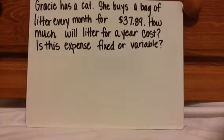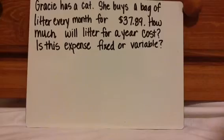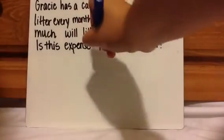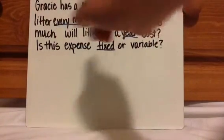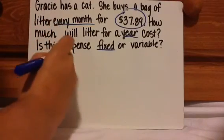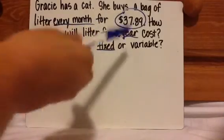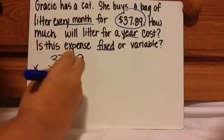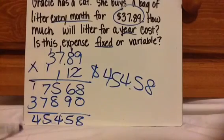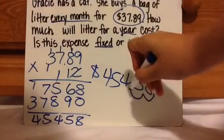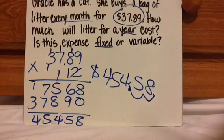From this problem, it doesn't say that sometimes she buys it and sometimes she doesn't, or that she'll buy one brand then another. It seems pretty consistent, so it's going to be a fixed expense. The question is how much will it cost for a year. For one month it's $37.89, and there are 12 months in a year, so I would multiply that by 12. That gives you the total cost, and because this is money, you go back two decimal spaces for the cents. So it's $454.68.